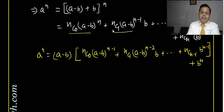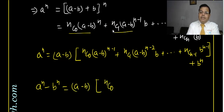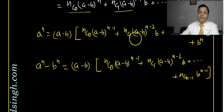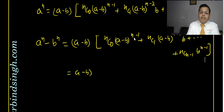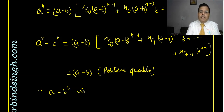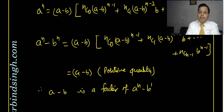Moving b^n to the left side: a^n - b^n = (a - b) · [NC0·(a-b)^(n-1) + NC1·(a-b)^(n-2)·b + ... + NC(n-1)·b^(n-1)]. Clearly (a - b) is a factor of the right-hand side. Therefore (a - b) is a factor of (a^n - b^n). This completes the proof.